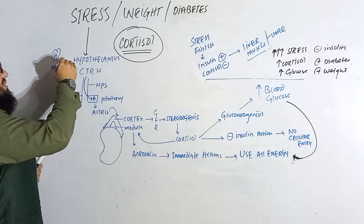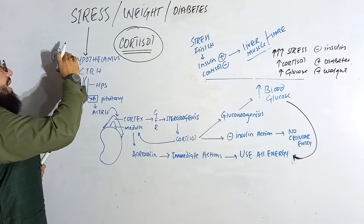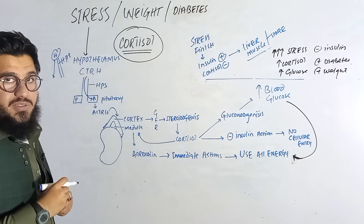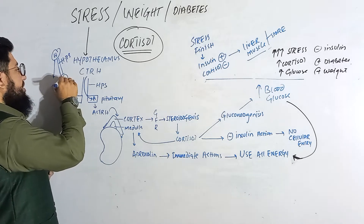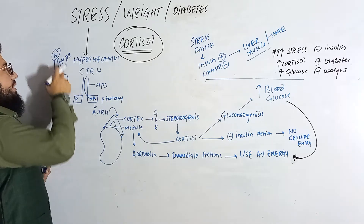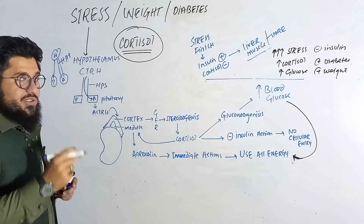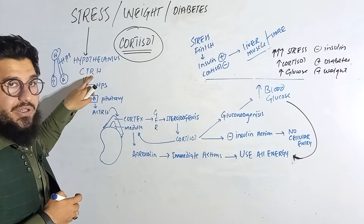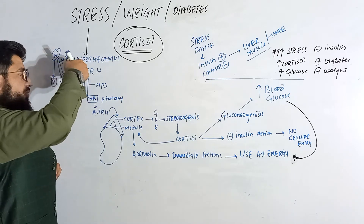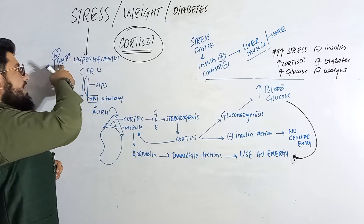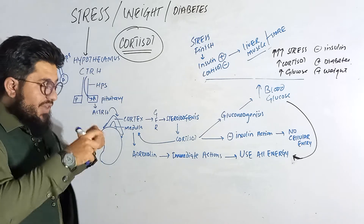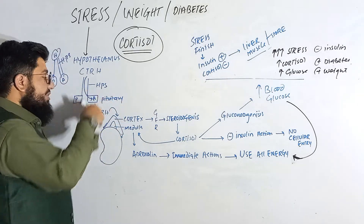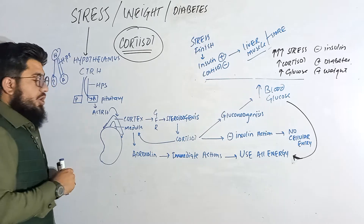That corticotropin-releasing hormone from the hypothalamus will start moving via the hypophysial portal system. The hypothalamus has two connections: one to the anterior pituitary and another to the posterior. The portal system carries CRH from the hypothalamus to the anterior pituitary via the hypophysial portal system.